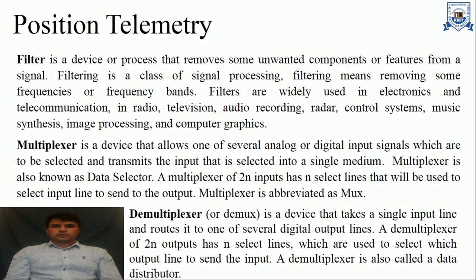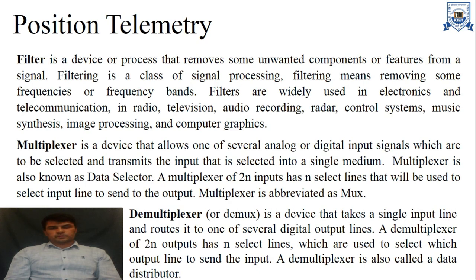The next component used in telemetry systems is the filter. A filter is a device or process that removes unwanted components or features from a signal. Filtering is a class of signal processing that means removing some frequencies or frequency bands. Filters are widely used in electronics and telecommunications — in radio, television, audio recordings, radar systems, control systems, music synthesis, image processing, and computer graphics.